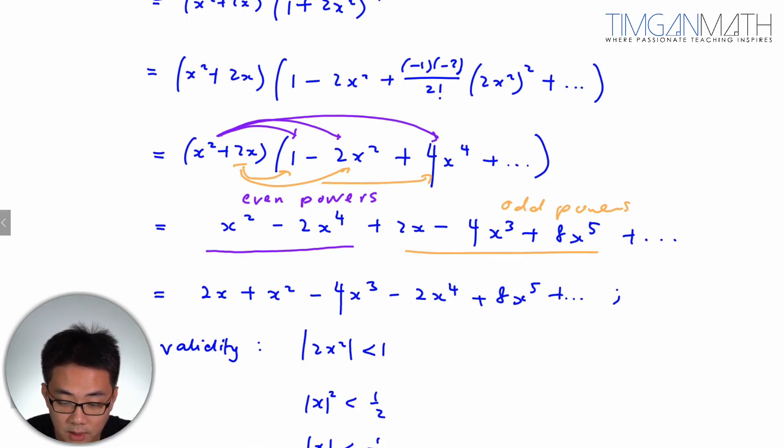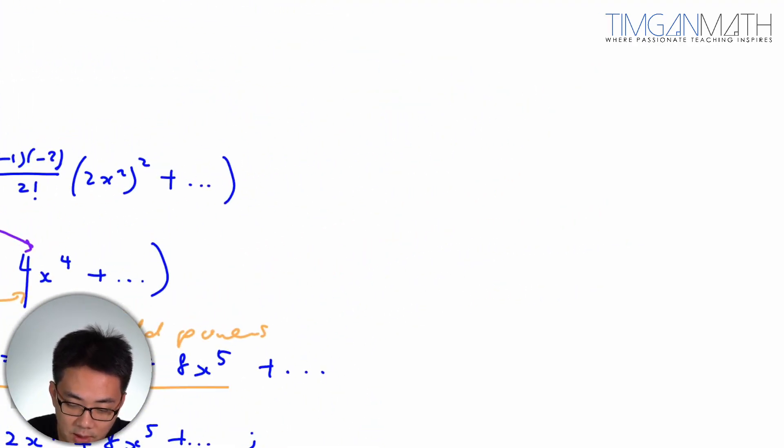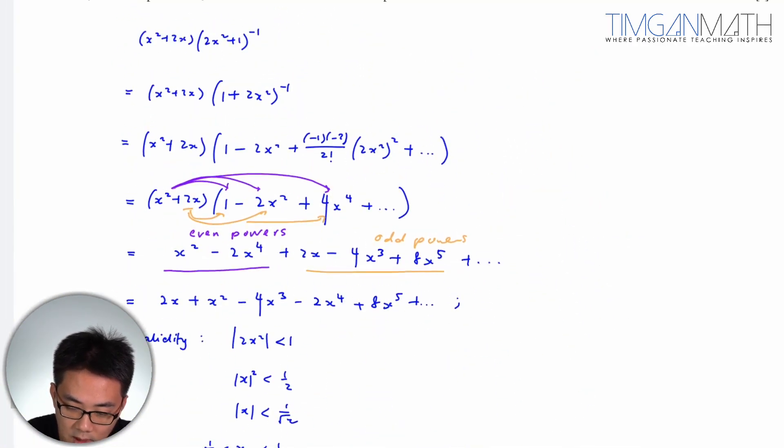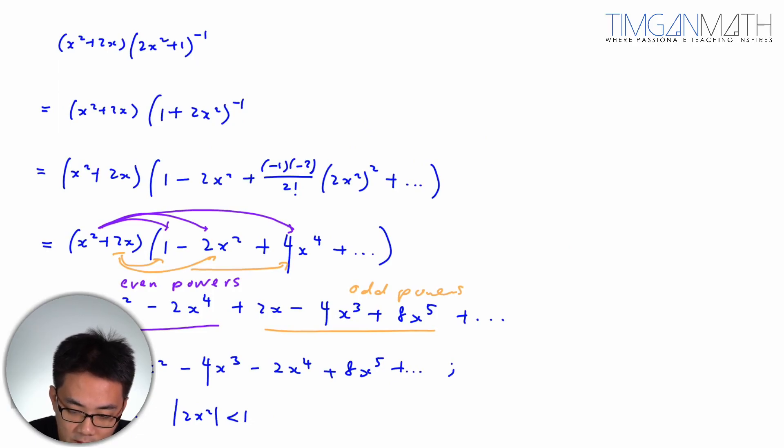So we need to find a pattern here. If you look at the expansion here, put it simply, this will just be (x^2 + 2x).